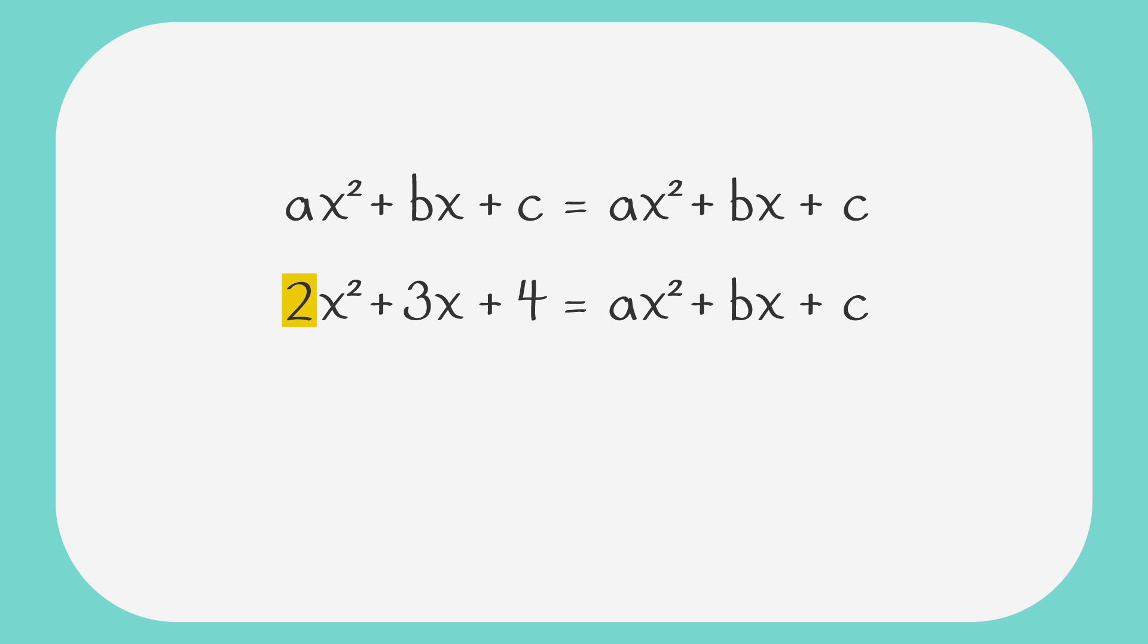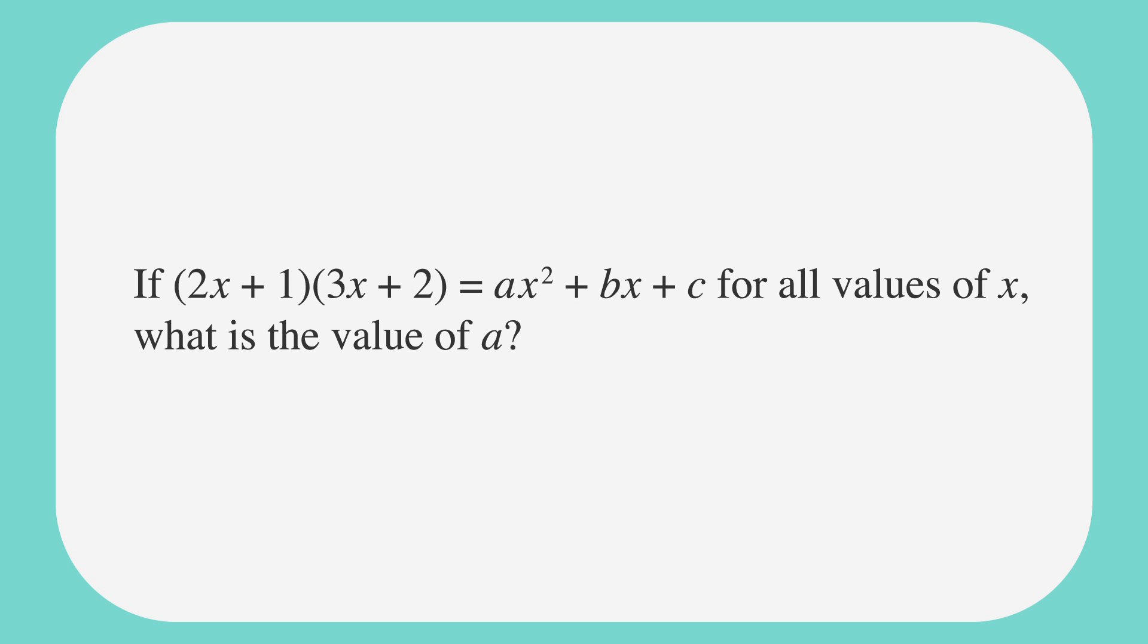In this simple equation, 2 is the coefficient of x² on the left-hand side of the equation. Therefore, the coefficient of x² on the right-hand side of the equation must also be 2, so a must equal 2. And if 3 is the coefficient of x on the left-hand side of the equation, then the coefficient of x on the right-hand side of the equation, b, must also be 3. Lastly, since 4 is the only number or constant term on the left-hand side of the equation, then the only number or constant term on the right-hand side of the equation must be 4.